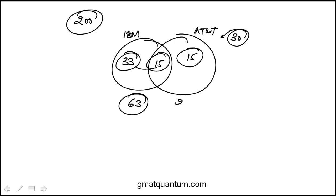And I need to subtract that from 200. That would give me the number of people who own stock in either company, and that's 137, choice E.